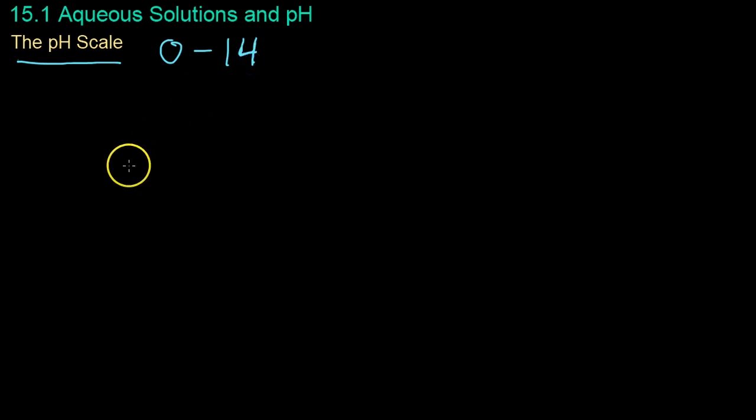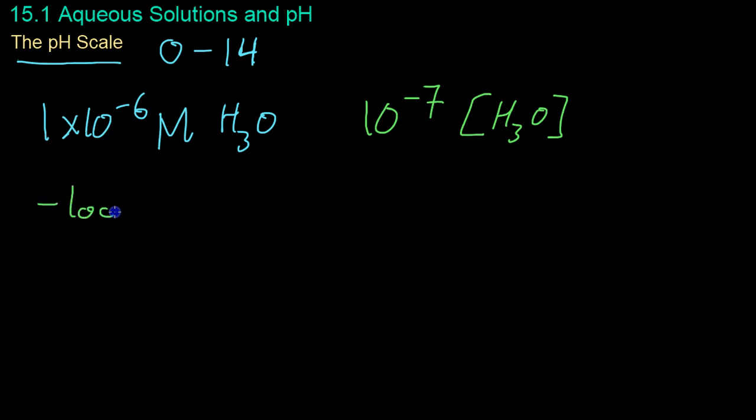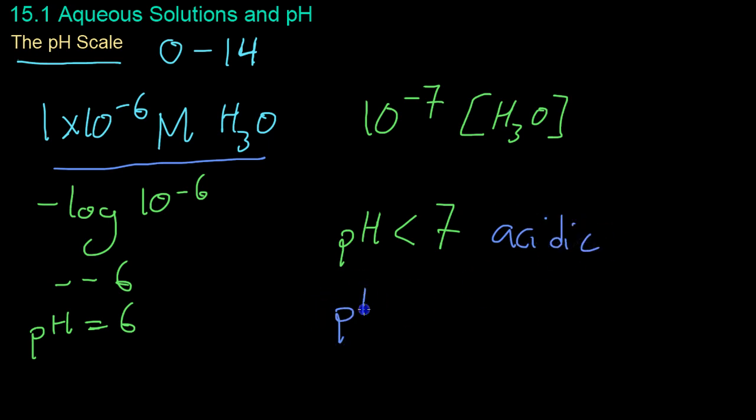What's the point of this pH scale if you don't understand what the numbers represent? As an example, let's take a solution that has 1 times 10 to the negative 6 molar concentration of hydronium. This concentration is almost 10 times neutral water. If you take the negative log of 10 to the negative 6, you get negative negative 6, or the pH is 6. When a pH is less than 7, the solution is acidic. If the pH is greater than 7, then the solution is basic.